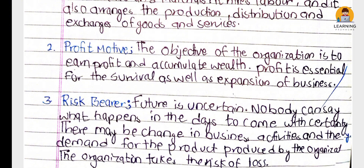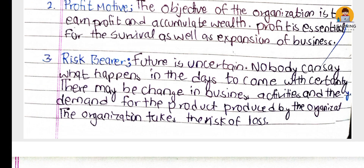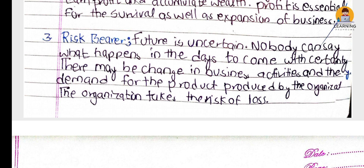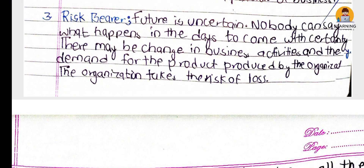The characteristics of organization: the motivation of the organization is profit motive. The major objective of the organization is to earn profit and accumulate wealth. The second characteristic is risk behavior — the future is uncertain; nobody can say with certainty what will happen in days to come. There may be changes in business activity and demand for the product produced by the organization. Thus, the organization takes the risk of loss; some business results in risk, some in loss, and some in profit.